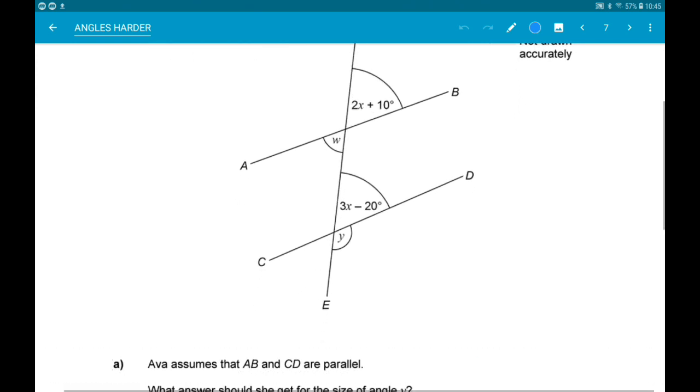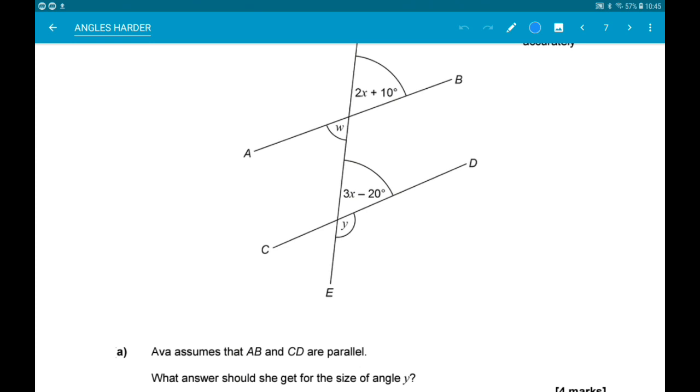Part A, Ava assumes that AB and CD are parallel. We want to work out what answer should she get for the size of angle Y.